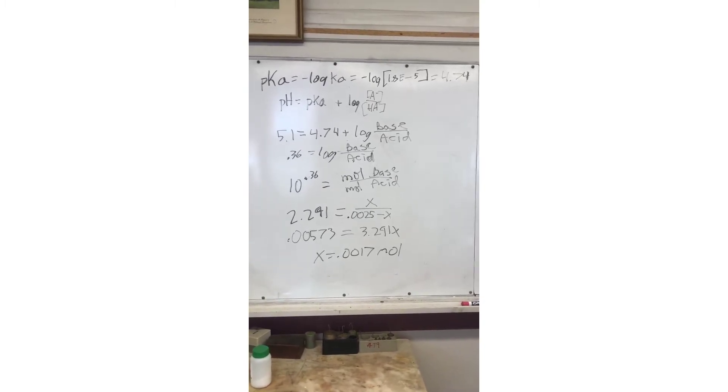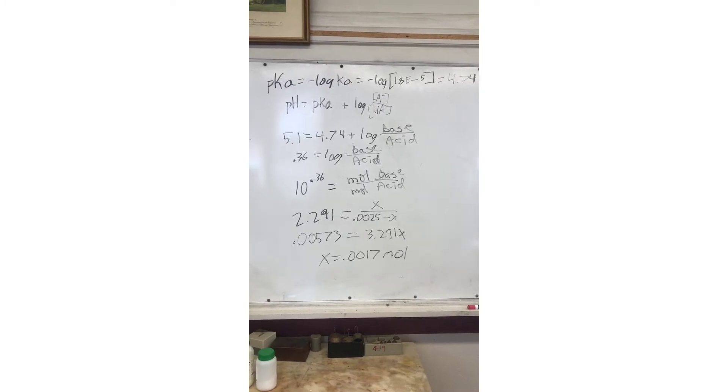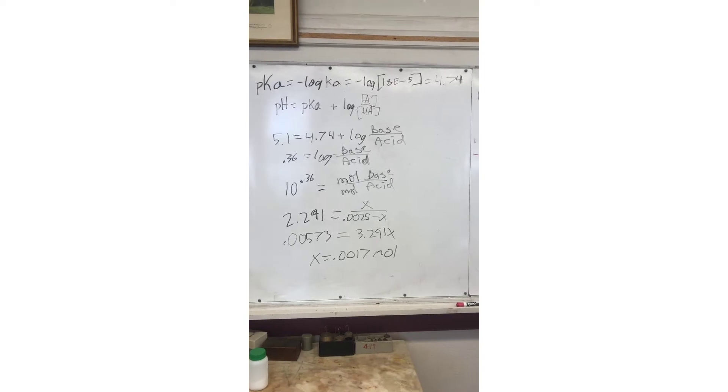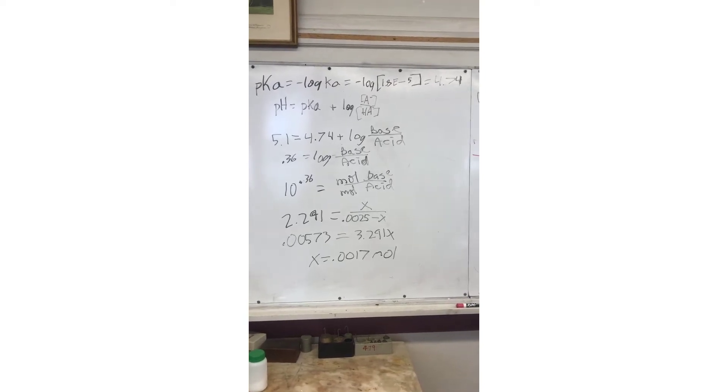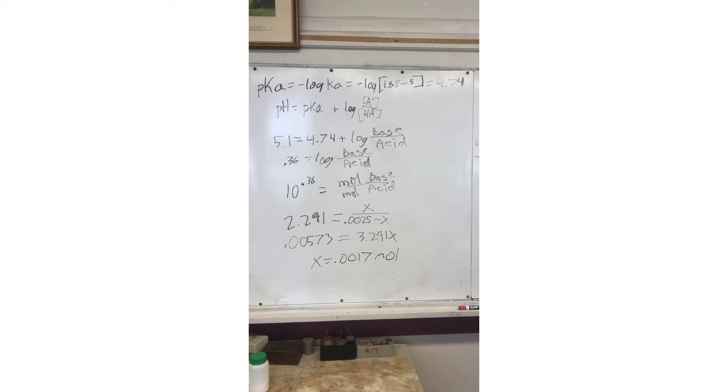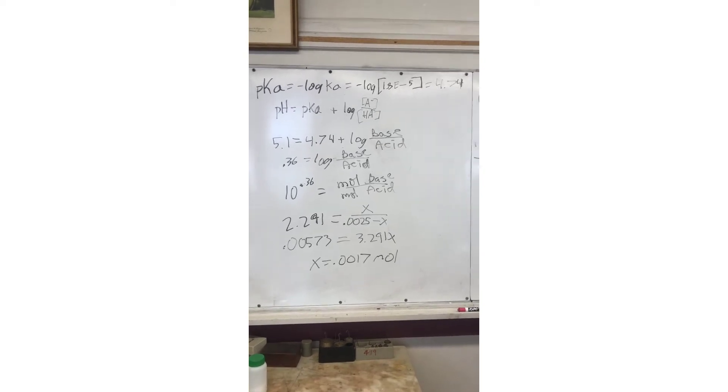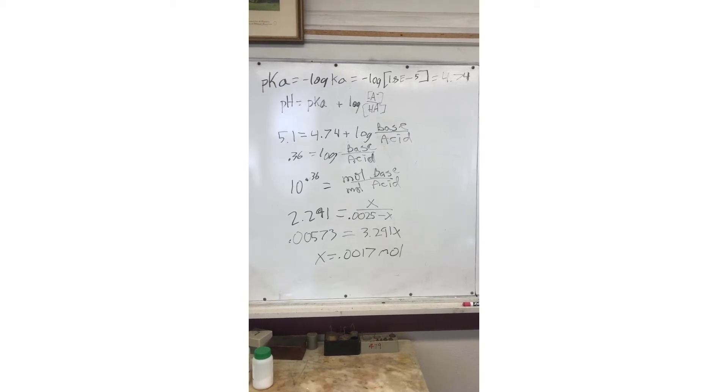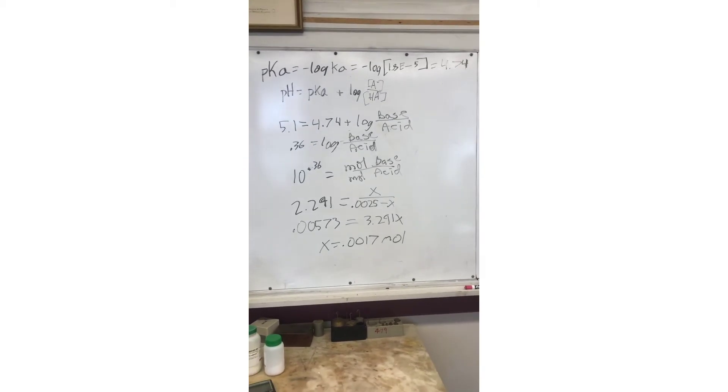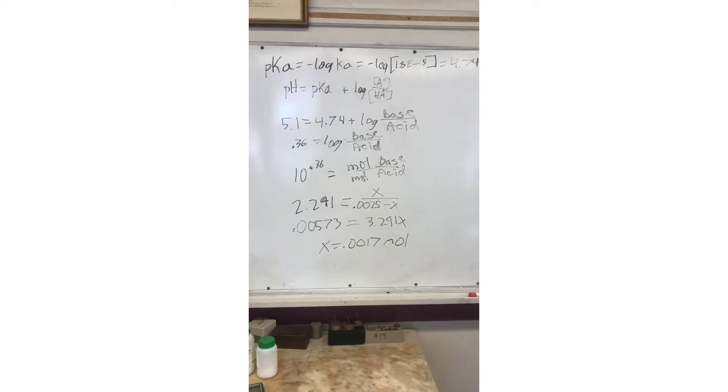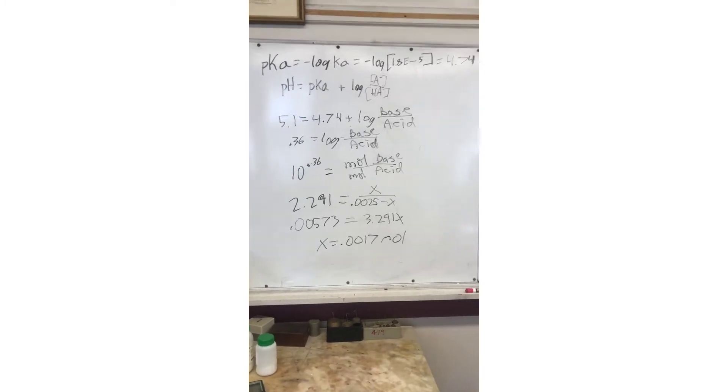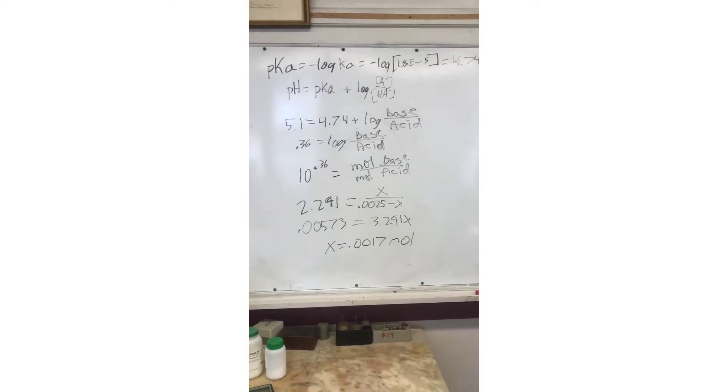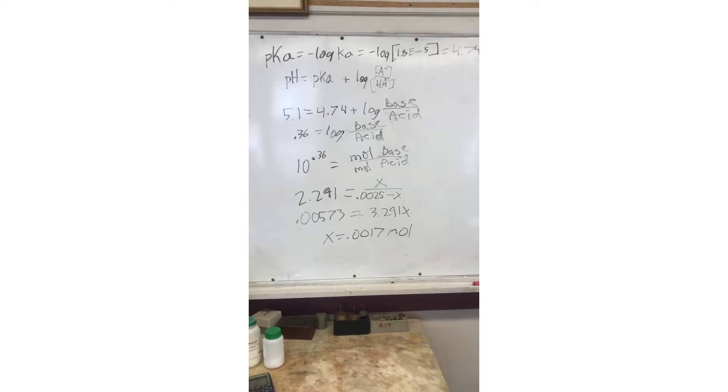Then we plug this into the formula with the pH. The formula is pH equals pKa plus the log of our base over our acid. That base over acid is a ratio to determine concentrations. Our intended pH is 5.1, so our formula is 5.1 equals our newly found pKa, 4.74, plus the log ratio of our base over our acid. If we subtract 4.74 from 5.1, we get 0.36 equals the log of our ratio.